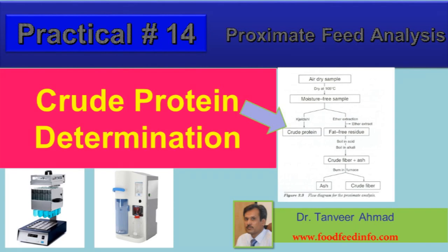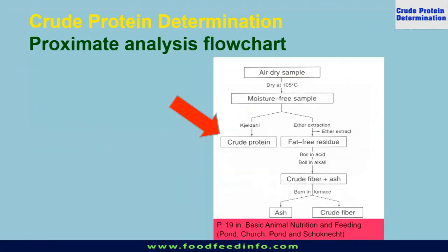Determination of crude protein contents in a feed sample. This is practical number 14, and we are performing proximate feed analysis. Before we did dry matter determination, then we did ether extraction, and from the fat-free sample, we determined the crude fiber and ash content of a feed sample. The only thing which is left now is the crude protein content of a feed sample.